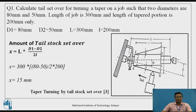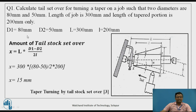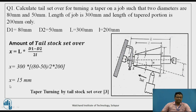Example 1: Calculate the tailstock set-over length for a taper turning operation where D1 = 80 mm, D2 = 50 mm, total job length L = 300 mm, and taper portion length l = 200 mm. Using x = l × (D1 − D2) / 2L, substituting the values gives x = 15 mm, which is the length of the tailstock set-over.